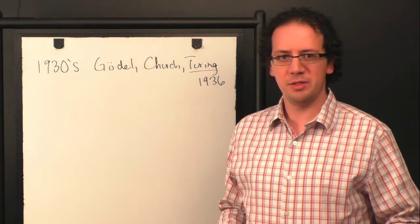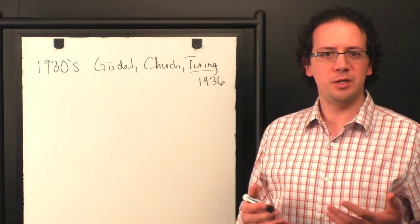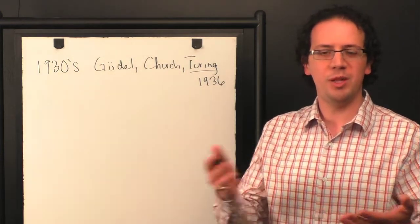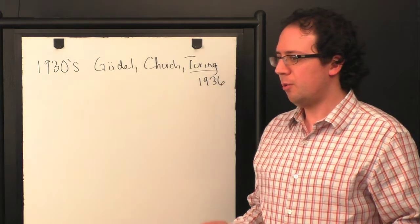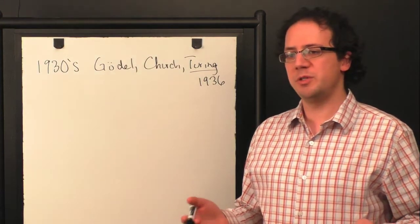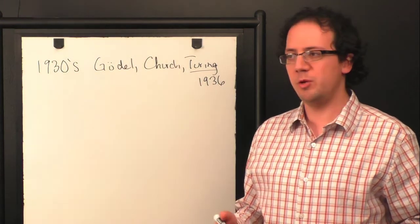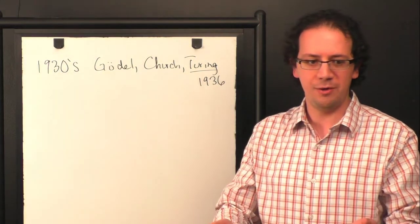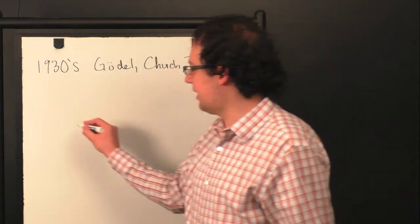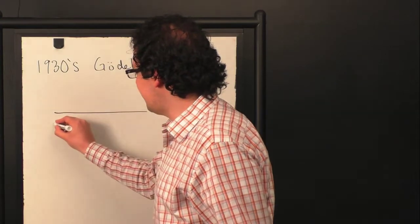So Turing's argument went like this. Say you're trying to compute a number or maybe a function. I give you some number and you want to apply that function to some number. What do you do? Well, you typically are working with paper, although of course, it doesn't matter that it's paper. It could be a blackboard. It could be nowadays your modern computer, but there's some place where you can record data.